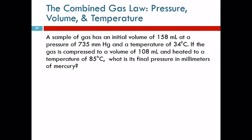Let's do an example. We'll use the same process, but our table is just going to have an extra column. A sample of gas has an initial volume of 158 milliliters at a pressure of 735 millimeters of mercury and a temperature of 34 degrees Celsius. If the gas is compressed to a volume of 108 milliliters and heated to 85 degrees Celsius, what is its final pressure in millimeters of mercury? We read through the problem and just make our table and get on with it.